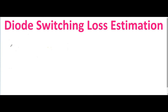Hello friends, welcome to Electronic Circuit Hub. In the last video we understood about the diode conduction loss estimation. In this video we are going to understand about the diode switching loss estimation. The total power loss P_total equals P_conduction plus P_switching. Please watch the last video so that you are able to calculate the total power loss, which is P_conduction plus P_switching.